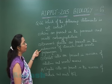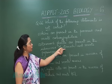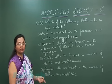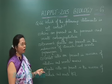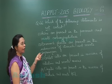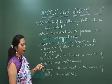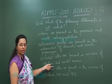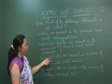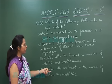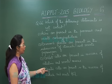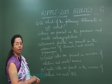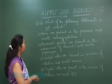Option 2 states that Brunner's glands are present in the submucosa of the stomach — this is wrong, because Brunner's glands are present in the submucosa of the small intestine, specifically in the duodenum. Option 3: Goblet cells are present in the mucosa of the intestine and secrete mucus — that's correct. Option 4: Oxyntic cells are present in the mucosa of the stomach and secrete HCl — that's also correct.